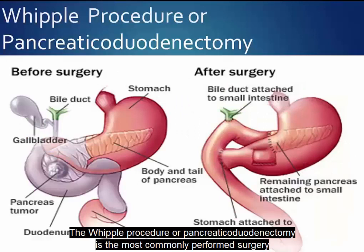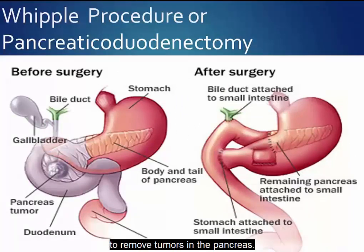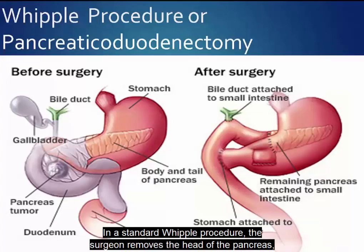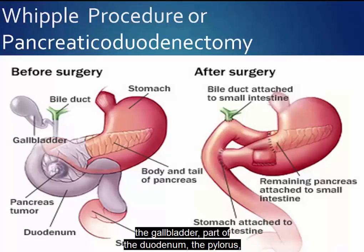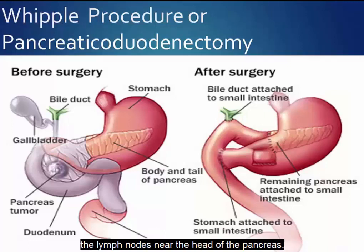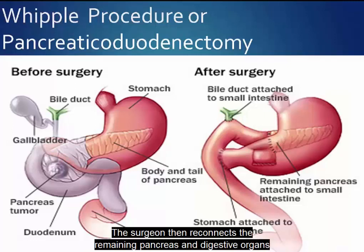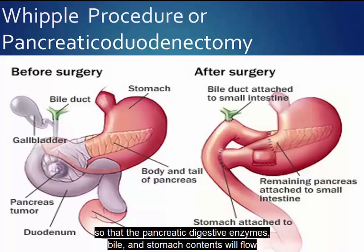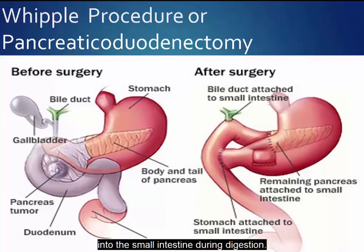The Whipple procedure, or pancreaticoduodenectomy, is the most commonly performed surgery to remove tumors in the pancreas. In a standard Whipple procedure, the surgery removes the head of the pancreas, the gallbladder, part of the duodenum, the pylorus, and the lymph nodes near the head of the pancreas. The surgeon then reconnects the remaining pancreas and digestive organs so that the pancreatic digestive enzymes, bile, and stomach contents will flow into the small intestine during digestion.